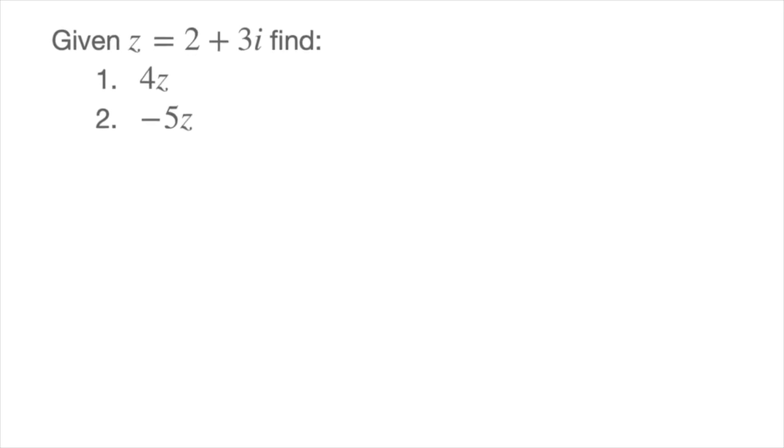So let me quickly move this question to the side. There we go. To multiply any complex number by a real number, we use the following rule. Given a complex number, say z which equals a plus ib,